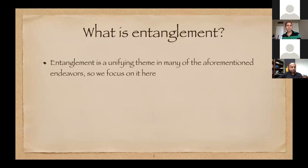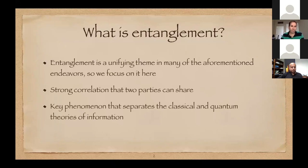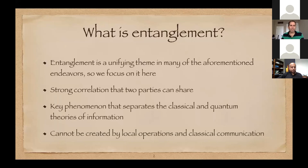Let's start from the basics — many of you may already know this, but let's still start from the basics. What is entanglement? It's really a key aspect of quantum information that separates it from classical information. You can think of it as a kind of super-correlation that two parties can share; they each have to have some particle of at least a two-particle state. One thing about entanglement is that we think of it in terms of what it is not — it cannot be created by what's called local operations and classical communication. In that sense, it's like a resource.